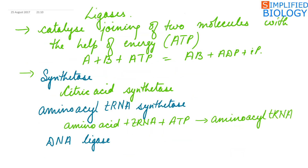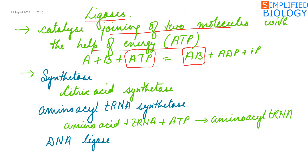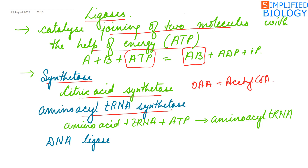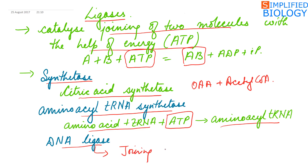Last, the Ligases. They catalyze the joining of two molecules with the help of energy — by utilizing ATP. A reacts with B and with the help of ATP, AB is formed. These enzymes are also known as synthetases. Example: citrate synthetase, where oxaloacetic acid reacts with acetyl-CoA to form citric acid. Another example is aminoacyl-tRNA synthetase, seen during the charging of tRNA in protein synthesis, where an amino acid reacts with its specific tRNA to form aminoacyl-tRNA using ATP. Last is DNA ligase, which helps in joining fragments during DNA replication.